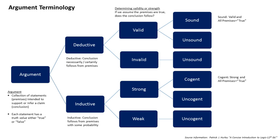A generalization — more accurately, an inductive generalization — proceeds from a premise about a sample to a conclusion about the population. The proportion Q of the sample has attribute A; therefore, the proportion Q of the population has attribute A. Example: there are 20 balls, either black or white, in an urn. To estimate their respective numbers, you draw a sample of 4 balls and find that 3 are black and 1 is white. A good inductive generalization would be that there are 15 black and 5 white balls in the urn. How much the premises support the conclusion depends upon the number in the sample group, the number in the population, and the degree to which the sample represents the population, which may be achieved by taking a random sample. The hasty generalization and the biased sample are generalization fallacies.